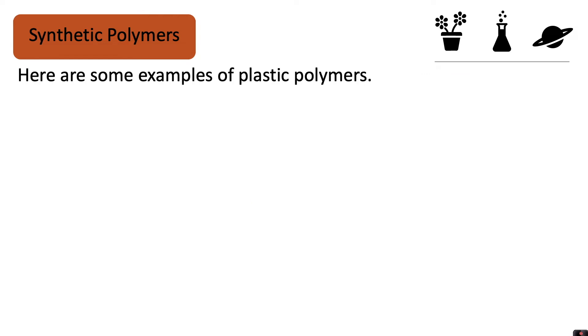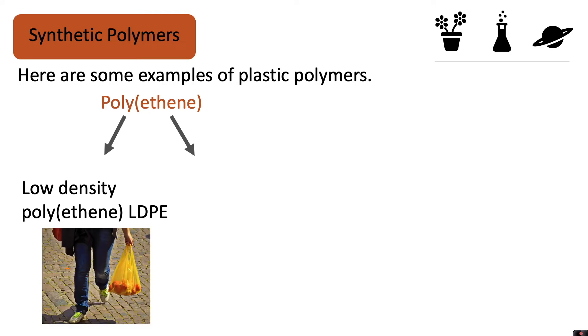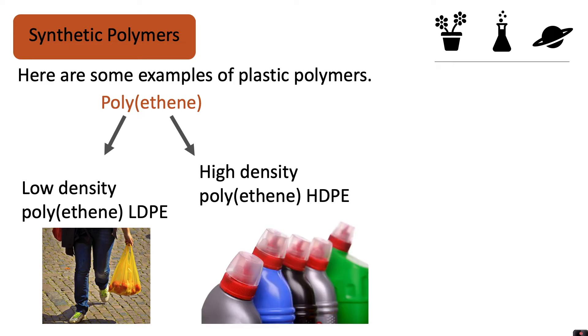Here are some examples of plastic polymers. Polyethene, or otherwise known as polythene, is an example of a plastic polymer and there are two types. Low density polyethene, or LDPE, is used to make things such as plastic bags. And high density polyethene, HDPE, is used to make harder plastics such as bottles and pipes.